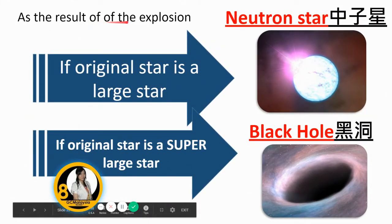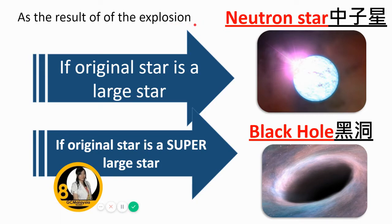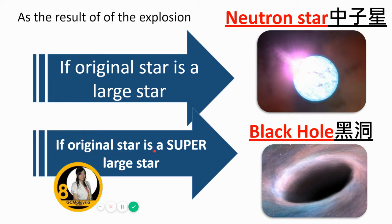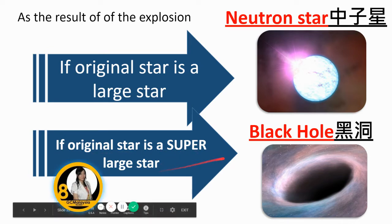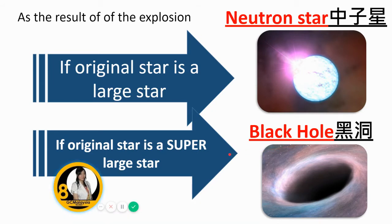As a result of the explosion, if the original star is a large star, it will become a neutron star. If the original star is a super large star, it will become a black hole.